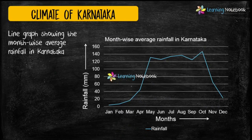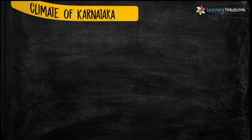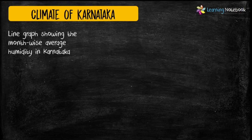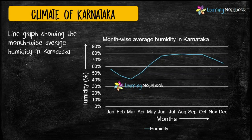Similarly, you can use a line graph to show month-wise average rainfall in Karnataka. Then you can show month-wise average humidity in Karnataka with the help of a line graph.